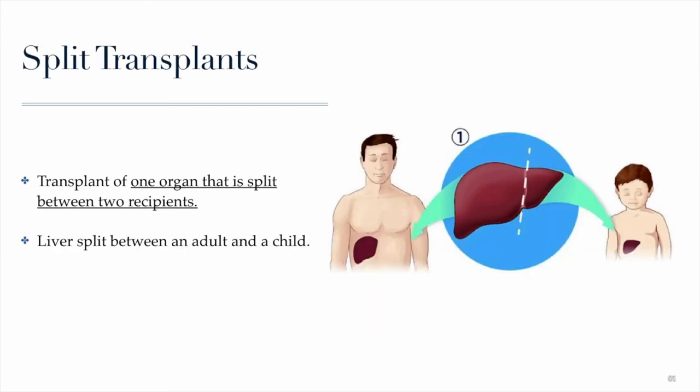Another category is called split transplants. A split transplant is when one organ is shared between two patients. This is most commonly done with the liver — if a liver becomes available for donation and you have both an adult and a child that match the tissue type, both can receive part of that liver. The adult receives the larger lobe and the child receives the smaller lobe. This is a good way of maximizing the availability of organs.